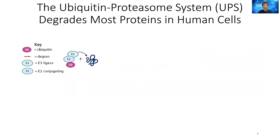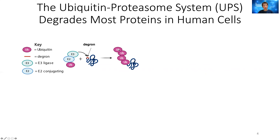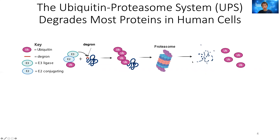Let me go through some background to introduce the ubiquitin proteasome system, or UPS. A lot of the regular proteins in the cell are being degraded by the ubiquitin proteasome system. Many of these proteins have sequence patterns or degrons which can be recognized by E3 ligase. The E3 ligase will recognize and bind to the protein, then through E2, will add ubiquitin onto it. Once the protein has a long chain of ubiquitin, it will be sent to the proteasome for degradation. This is also in equilibrium because there are de-ubiquitinating enzymes, or DUBs, which remove the ubiquitin from the protein to keep it stable.